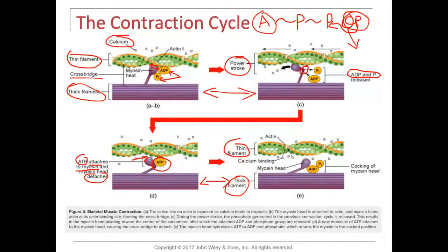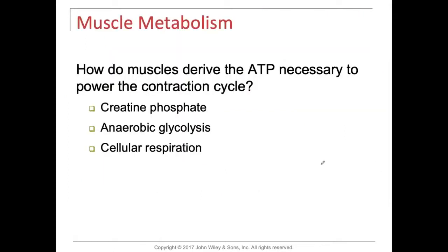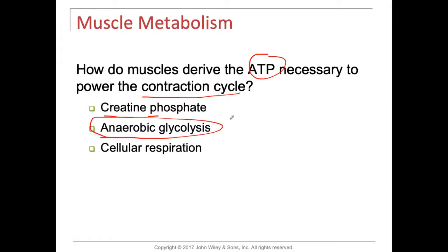You need ATP specifically for the detachment to take place. And once it detaches, the ATP goes back to ADP and creatine phosphate once again. So how do muscles derive the ATP necessary to power the contraction cycle? There are three sources: creatine phosphate (CP), anaerobic glycolysis — which doesn't require oxygen — and cellular respiration, which is aerobic respiration.